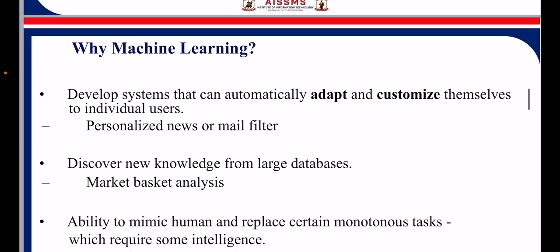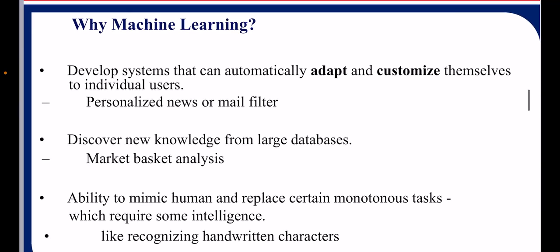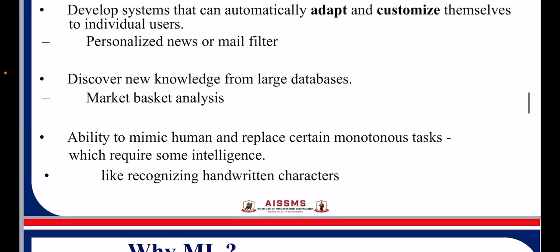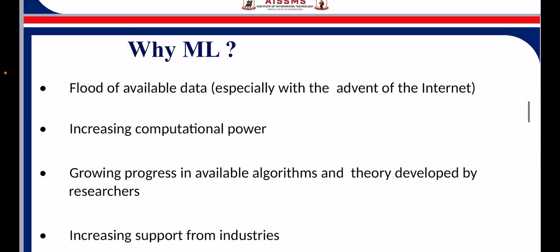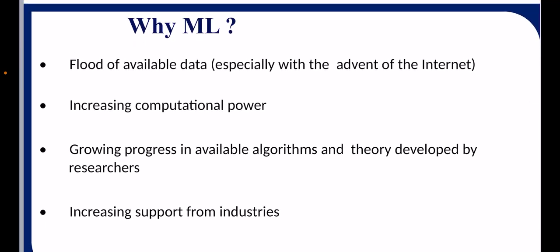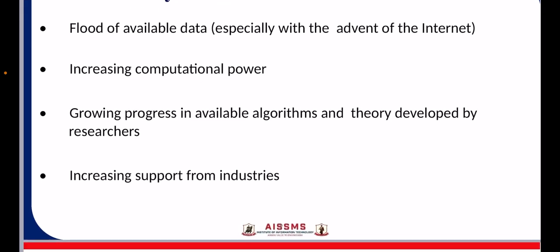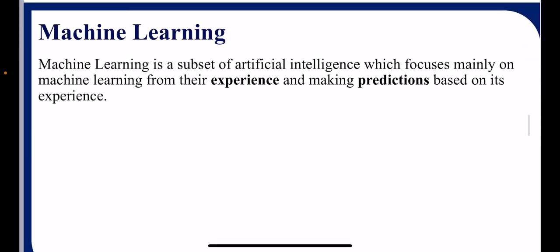Why machine learning? Because it develops systems that can automatically adapt and customize themselves. Other reasons include the flood of available data, increasing computational power, growing progress in available algorithms, and increasing support from industries — because it simplifies the job of humans. Machine learning is a subset of artificial intelligence which focuses mainly on machines learning from their experience and making predictions based on that experience.